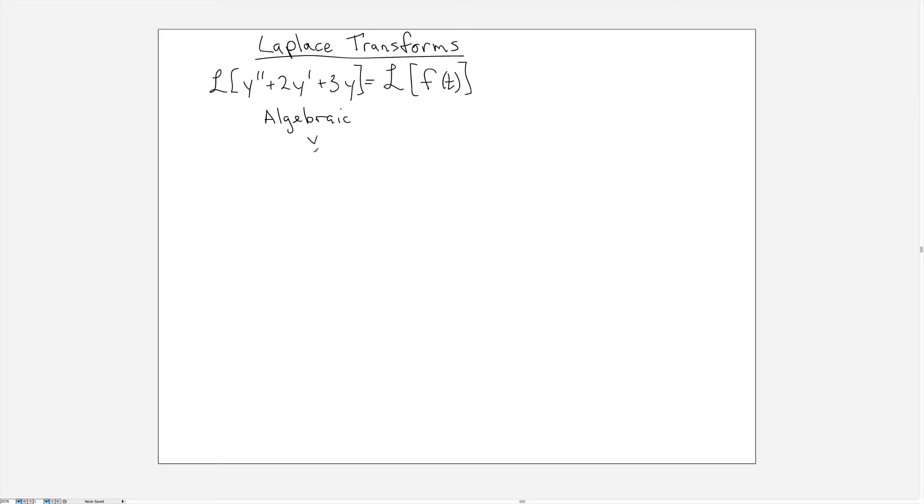And so what you end up with is something that we're going to note as capital Y of S, and that is the transformed version of Y of T. So the overall procedure in solving a differential equation if you're using Laplace transforms is to transform both sides of your equation to get an algebraic problem, and then solve the algebraic problem using simpler techniques, and that gives you Y of S.